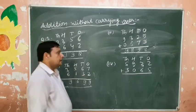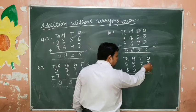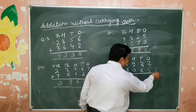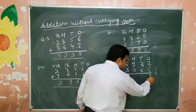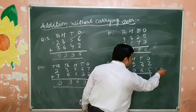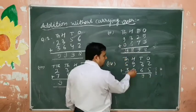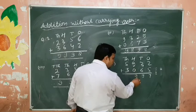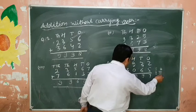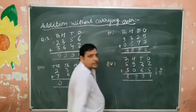Another example: ones place — 2 plus 5 is 7. Tens place — 6 plus 3 is 9. Hundreds place — 9 plus 0 is 9. Thousands place — 5 plus 3 is 8. This is my answer.